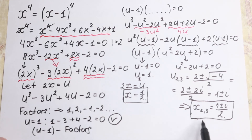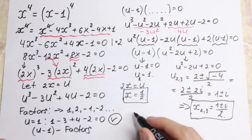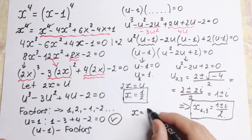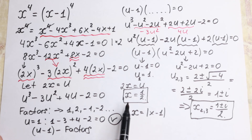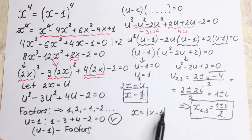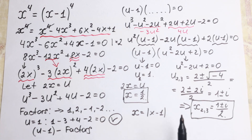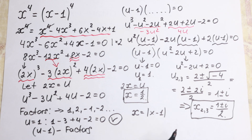Some people prefer the simpler method of taking the fourth root of both sides directly, giving x equal to the absolute value of (x minus 1). That approach will give you x equal to 1 half, but it will not reveal the complex roots. This method gives all roots the equation has — x equal to 1 half in real numbers, and (1 plus or minus i) over 2 as complex roots. If you only need real solutions, the quicker method is fine, but for a complete solution you need this approach.